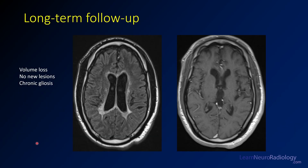This patient went on to have long-term follow-up showing volume loss, no new lesions, but chronic gliosis. The ventricles are enlarged and the periventricular white matter is very T2 bright and gliotic, though there is no enhancement at this time.